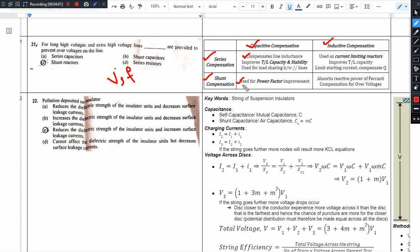Transmission line stability and power handling capacity of the transmission line. Capacitor in shunt or parallel is for power factor correction.